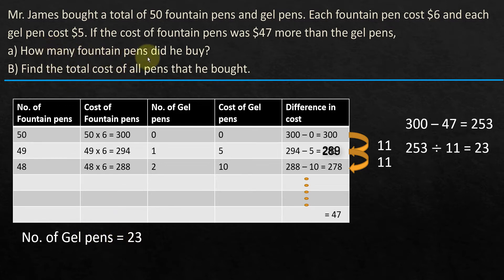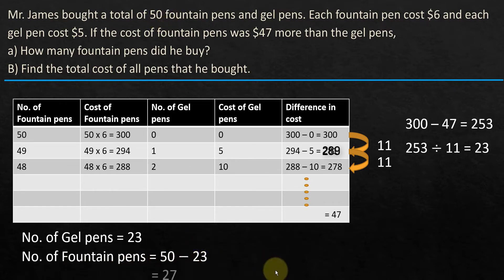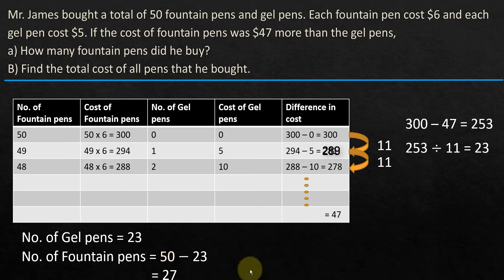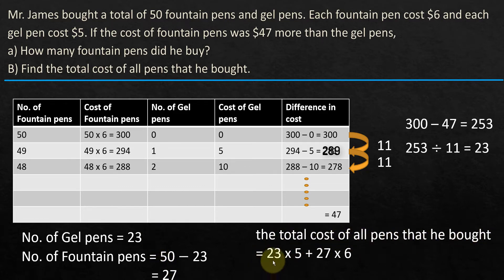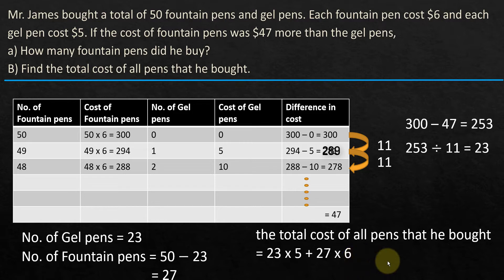The question asks how many fountain pens did he buy. If the number of gel pens is 23, and we know the total is 50 pens, then the number of fountain pens is 50 minus 23, which is 27. Now for the total cost of all pens: the total cost equals 23 times 5 (gel pens) plus 27 times 6 (fountain pens). That comes to $277.